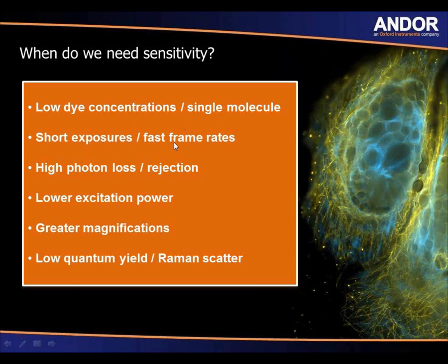Another important factor is when you're using greater magnification. If you're using a 100x objective rather than a 10x objective, you're going to be spreading the amount of emitted light over a much larger area. Therefore, in the sensor itself, the pixels will receive less light at greater magnification, making it very important to have a sensitive detector.